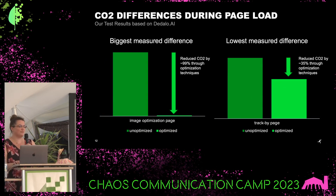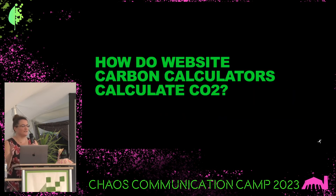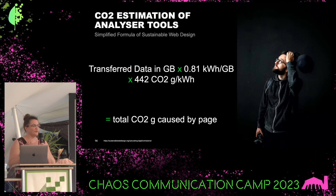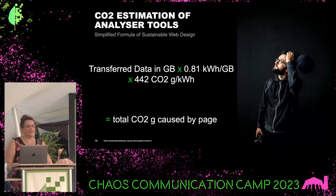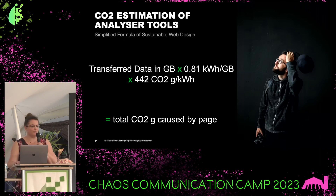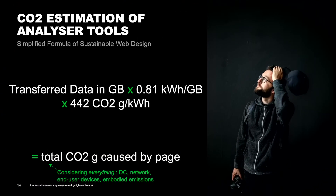And the question arose: what do these website carbon calculator tools really calculate, how do they calculate CO2? A lot of them use some version of this formula that is proposed by sustainablewebdesign.org, and it is basically taking the amount of data, multiplying it with 0.81, multiplying it with the carbon intensity of the electricity, and then you get the total CO2. Let's talk a little bit about this formula. The total CO2 means really everything — all the electricity consumption in the data center, the network, the end-user device, and all the embodied emissions. Embodied emissions are those emissions caused during the production of the hardware. So really considering everything, and everything should fit in this simple formula?